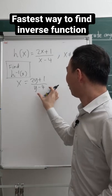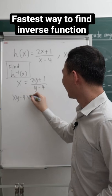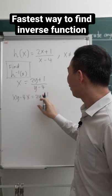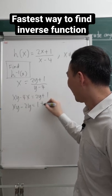Alright, so I'm going to group them, I cross multiply. So xy minus 4x equals to 2y plus 1. Then I group the y together so that I can factorize out the y later, 1 plus 4x.